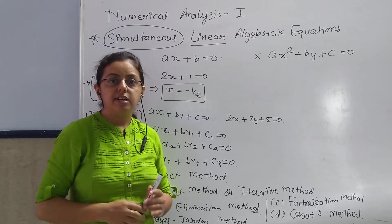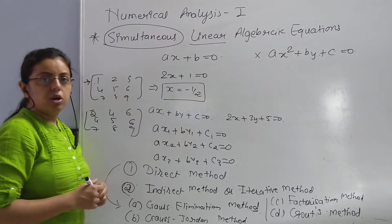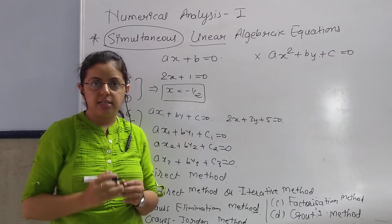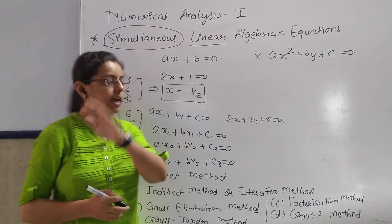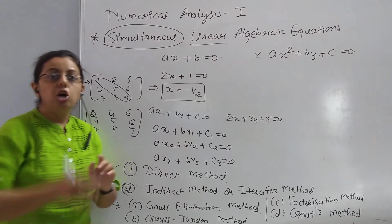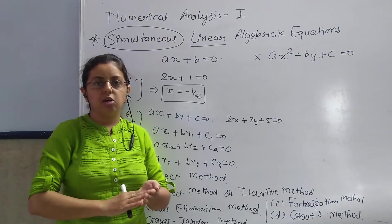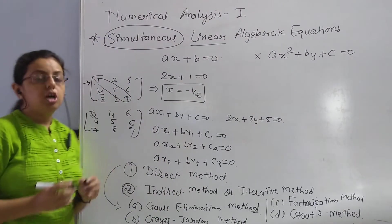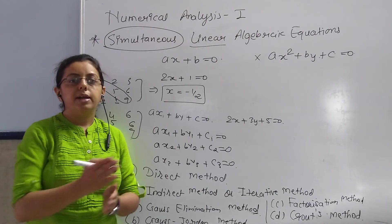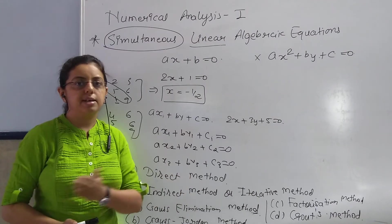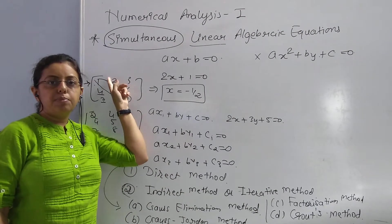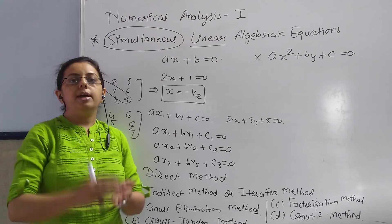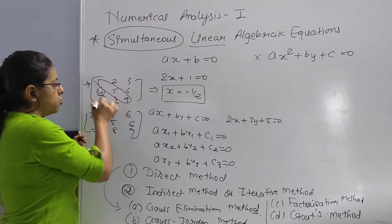Upper triangular matrix means: the principal diagonal — the diagonal you can see going across — for example in a 3×3 matrix the elements 1, 5, 9 form the principal diagonal. The elements under the principal diagonal — you have to make them 0. So above and on the diagonal you form the upper triangular structure.